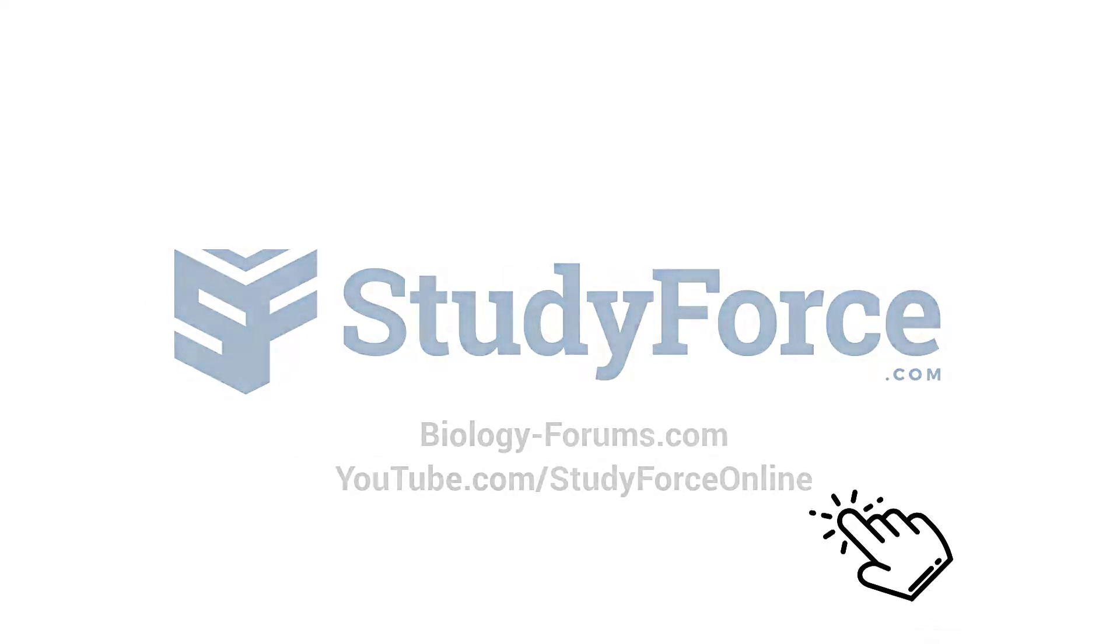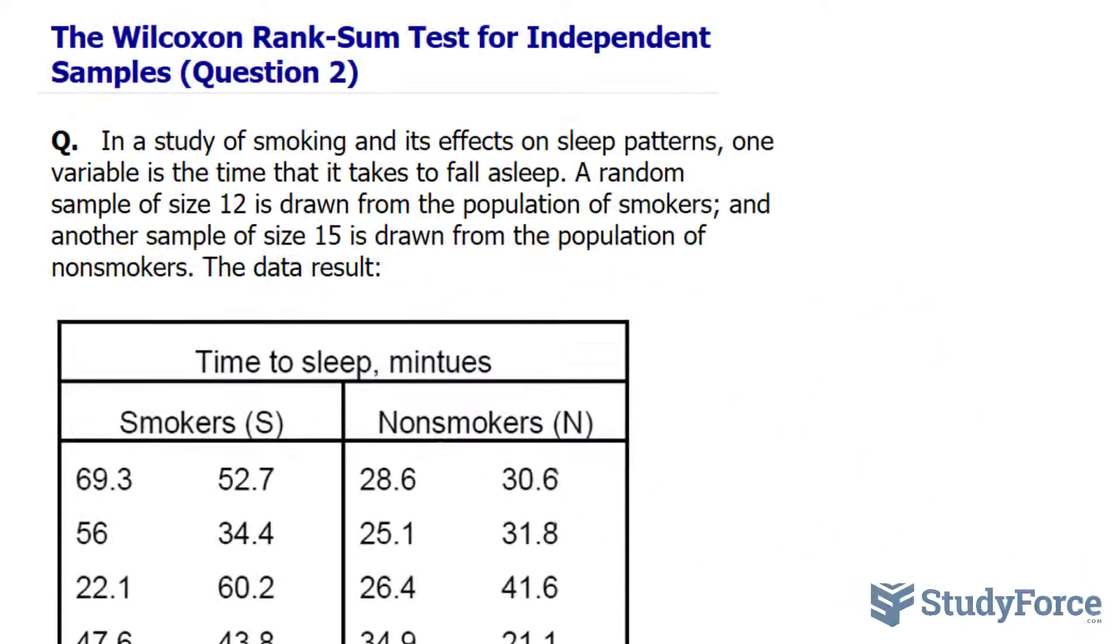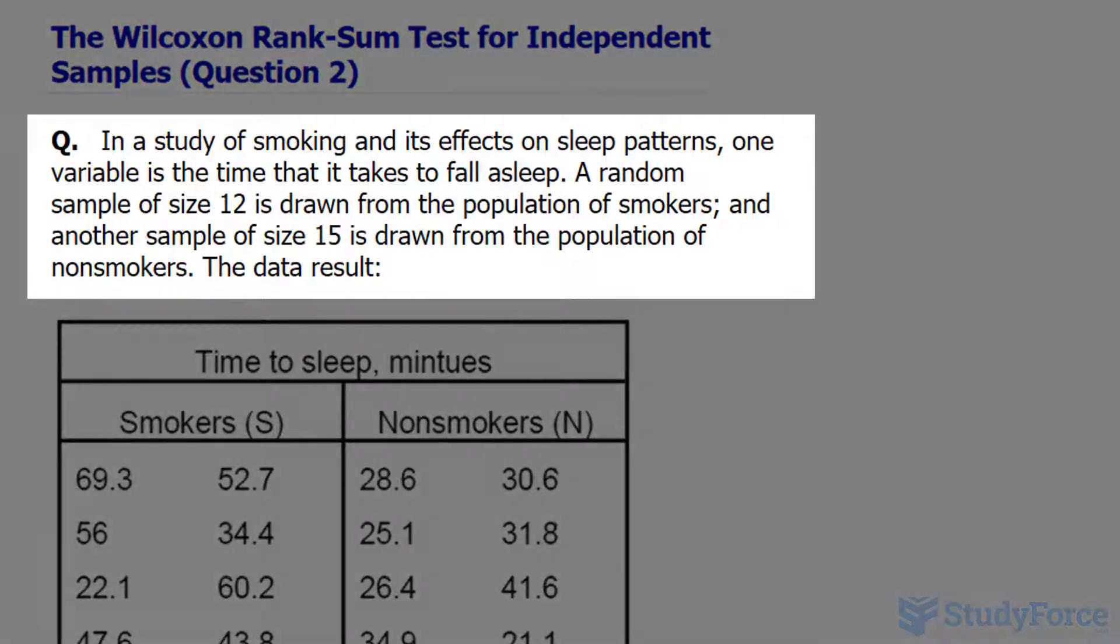Welcome back everyone to example 2 of our series where we use the Wilcoxon Rank Sum Test for independent samples. This time the question reads, in a study of smoking and its effects on sleep patterns, one variable is the time that it takes to fall asleep.